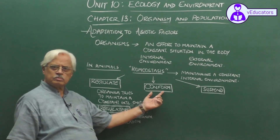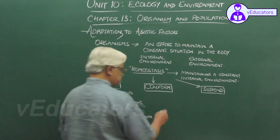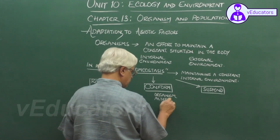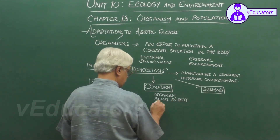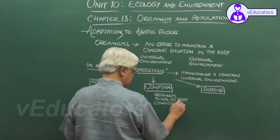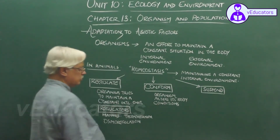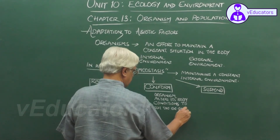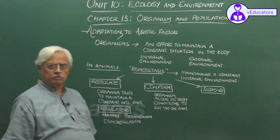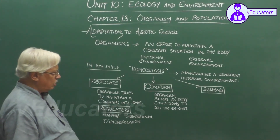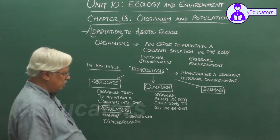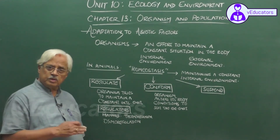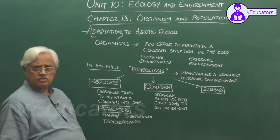The second situation is conform. This is a situation where the organism alters its internal environment — alters its body conditions — to suit the external environment. For example, animals called poikilotherms, or cold-blooded animals, have a body temperature that fluctuates according to changes in the surrounding environment.